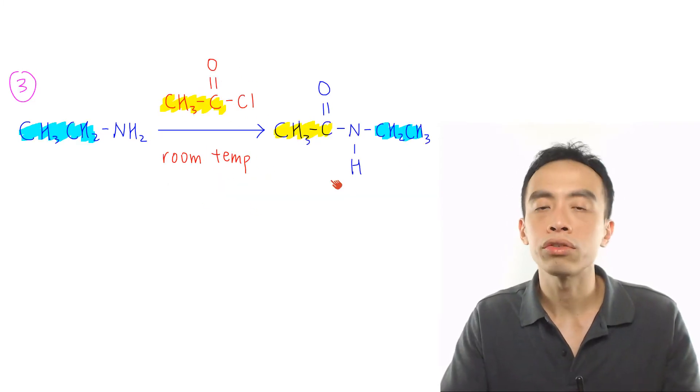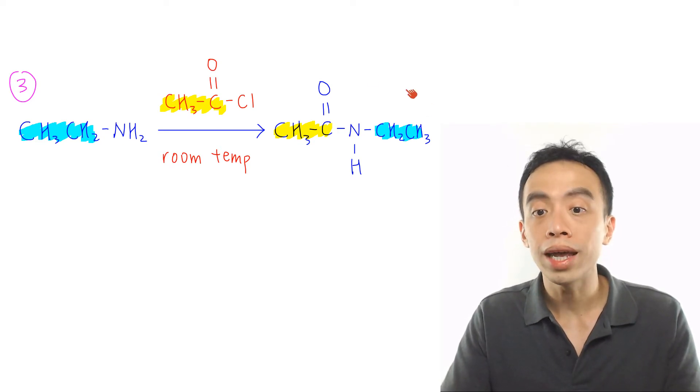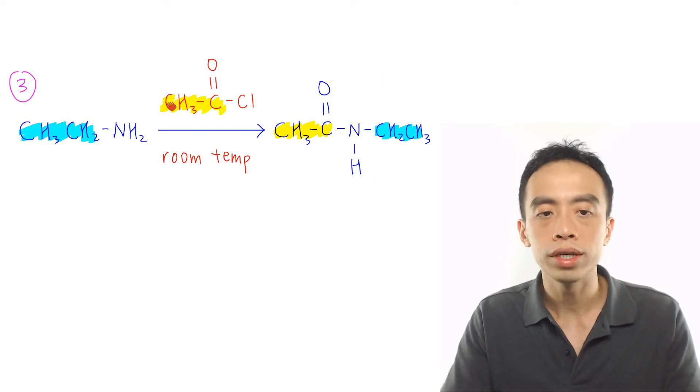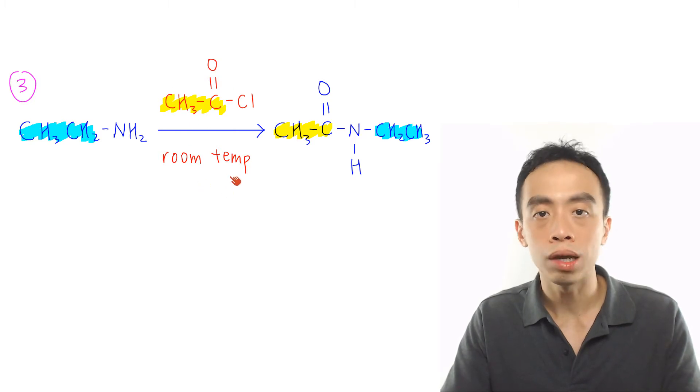Third reaction of amine is the condensation reaction to form amides. This is done using acid chloride at room temperature.